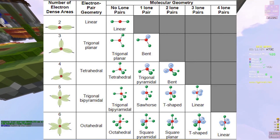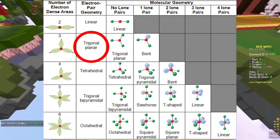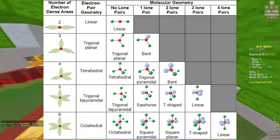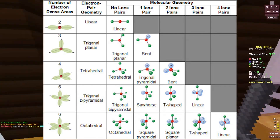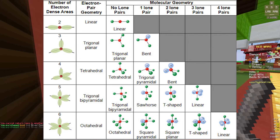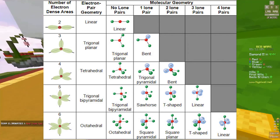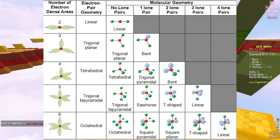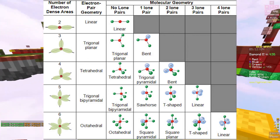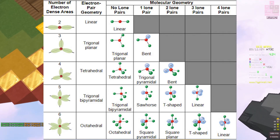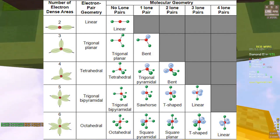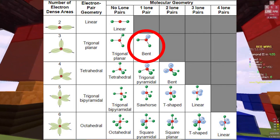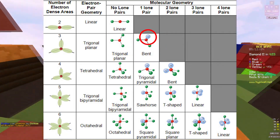Moving on to three electron dense areas: the electron pair geometry is trigonal planar. The molecular geometry depends on whether there are lone pairs. Electron pair geometry doesn't account for lone pairs, whereas molecular geometry takes lone pairs into account and looks at the 3D orientation. For three electron dense areas with one lone pair, the formula is AX₂E₁.